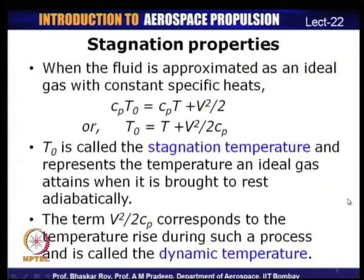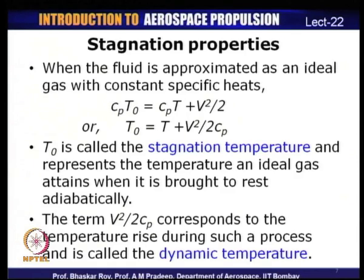Stagnation temperature equals static temperature plus dynamic temperature. T₀ is defined as the stagnation temperature and represents the temperature an ideal gas will attain if brought to rest adiabatically. The second term V²/(2Cₚ) corresponds to temperature due to velocity and is called dynamic temperature. For non-zero velocities, stagnation temperature is always greater than static temperature.